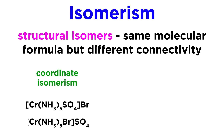This could mean coordinate isomerism, where the composition of a complex ion varies. Look at these two chromium complexes. In one of them, the sulfate is coordinated and bromide is the counter ion to the complex, and in the other, bromide is coordinated and sulfate is the counter ion. There is also linkage isomerism.